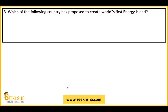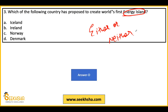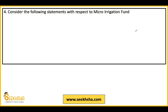The third question is a factual and direct question. Which country made the world's first energy island? Options are Iceland, Ireland, Norway, and Denmark. The answer is Denmark — Denmark made the world's first energy island.